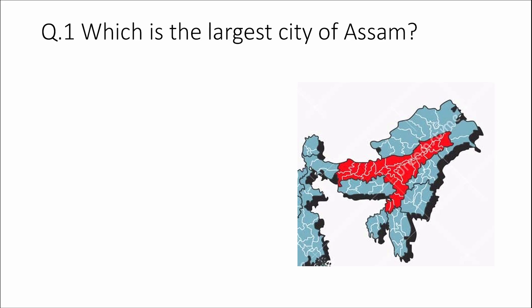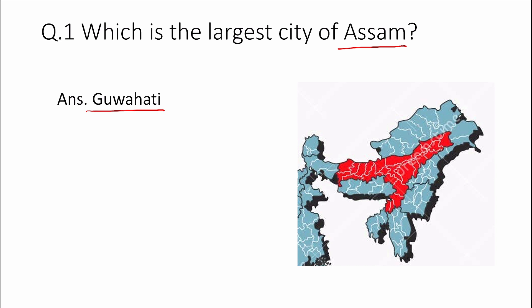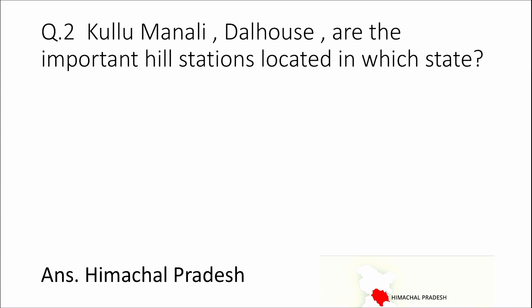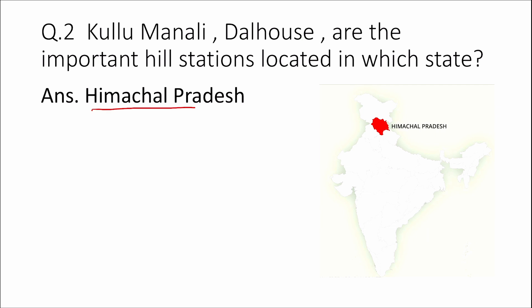Question 1: Which is the largest city of Assam? Answer: Guwahati. The capital of Assam is Dispur. Question 2: Kullu, Manali, and Dalhousie are the important hill stations located in which state? Answer: Himachal Pradesh.